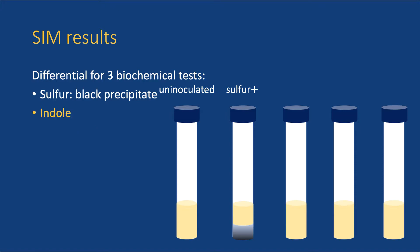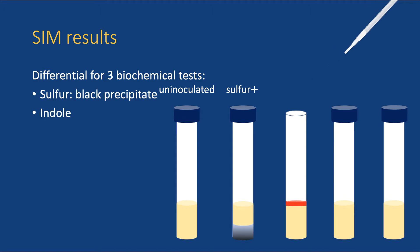Some bacteria have an enzyme called tryptophanase, with which they can break down the amino acid tryptophan and produce indole as an end product. To detect indole, a special reagent called COVAX reagent is required. Your box does not have COVAX reagent, so you will skip this test, but you should know it exists and how we would test for it. After incubation of the SIM tube, a few drops of the COVAX reagent are added to the tube. If a bright red ring appears at the top of the tube, the bacteria are indole positive. If there is no color change in about a minute or so, the bacteria are indole negative.